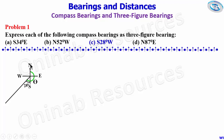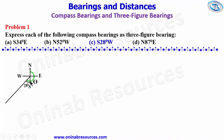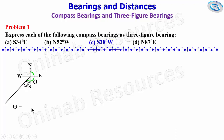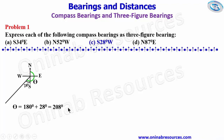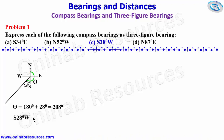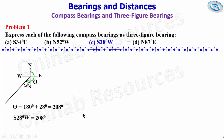The angle between north and south is 180 degrees, so moving clockwise to reach south is 180 degrees. We still need to go 28 degrees further to get to the line. So theta equals 180 degrees plus 28 degrees, which gives 208 degrees. Therefore, south 28 degrees west equals 208 degrees as a three-figure bearing.